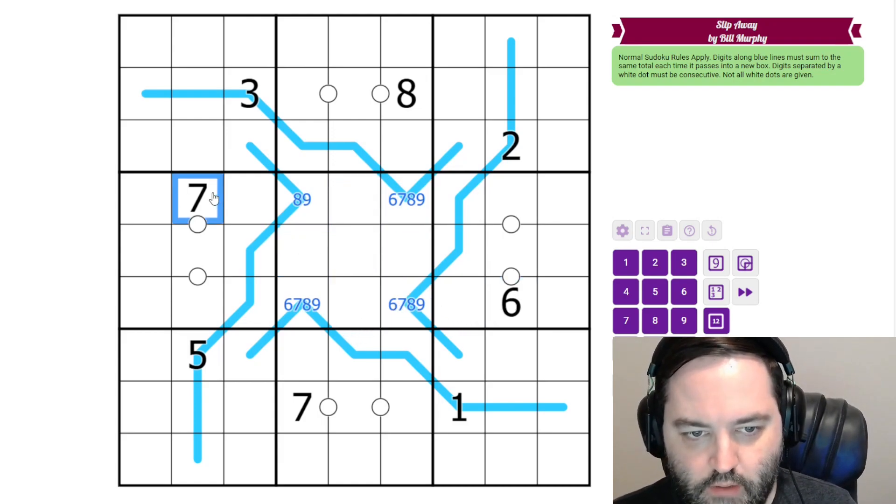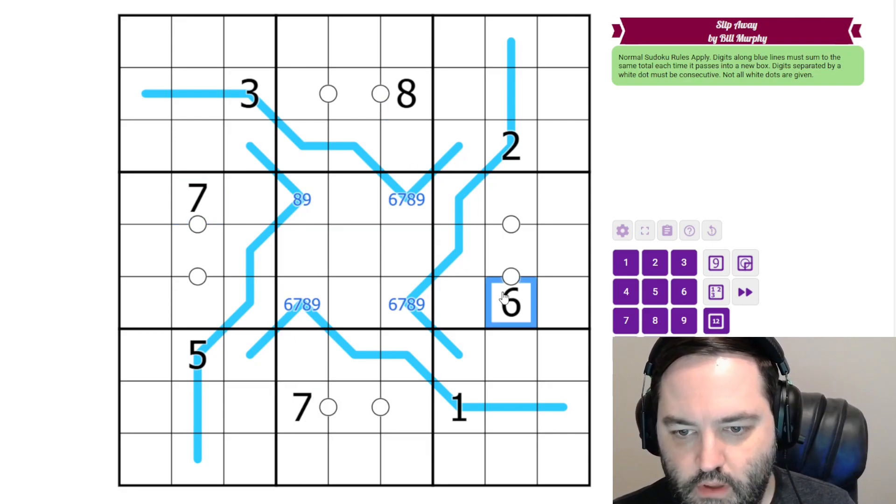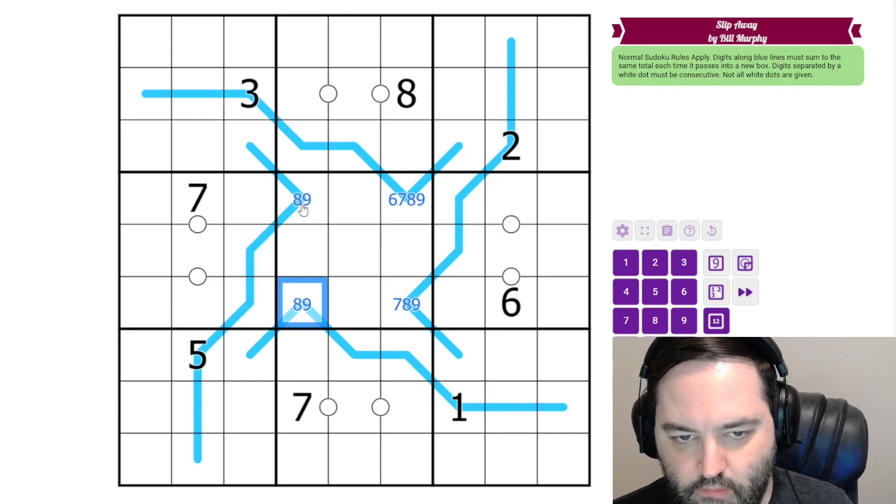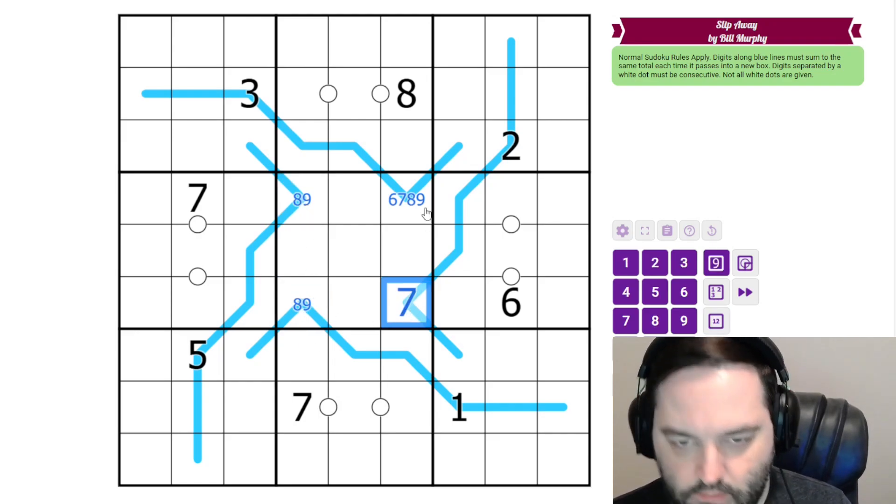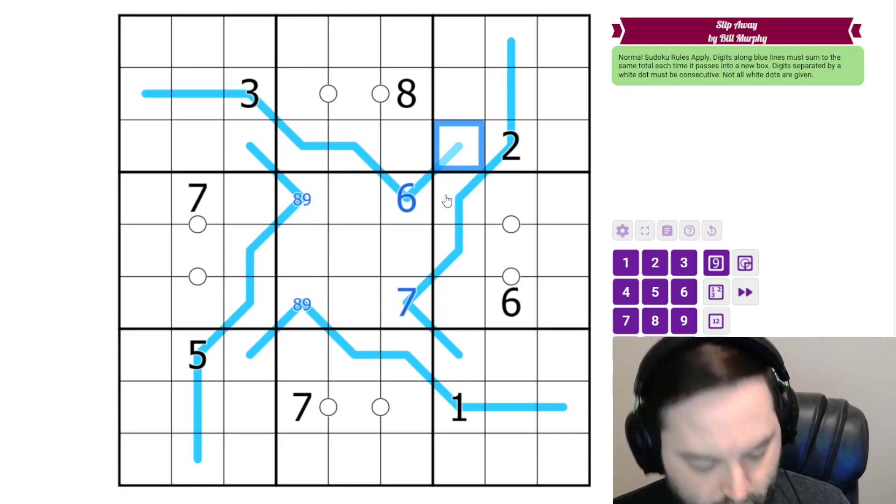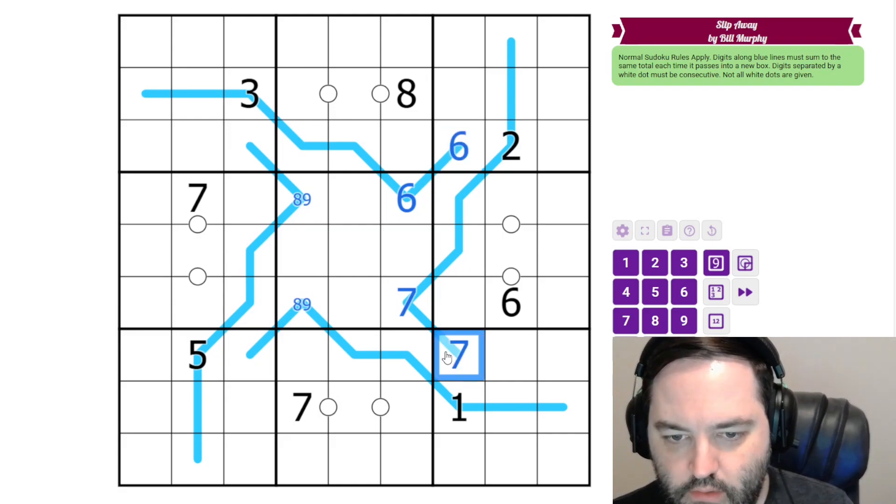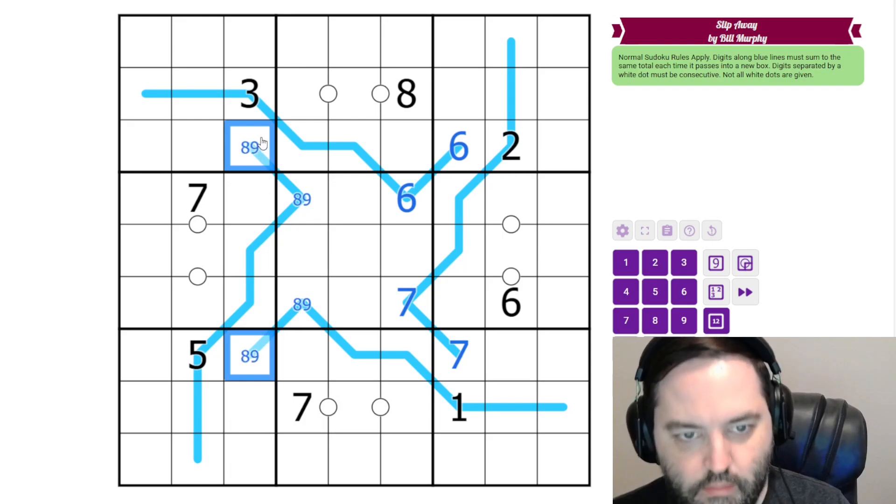But we can do better because we have some given digits in the grid. So neither of these can be 6, and this can't be 7. So this is an 8, 9 pair. This is a 7, and this is a 6. And these digits are the same. So we have an 8, 9 pair in this column.